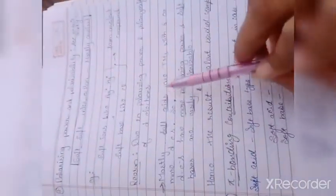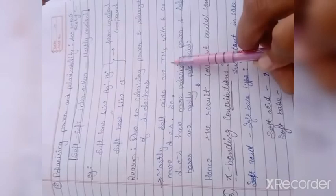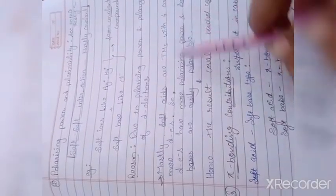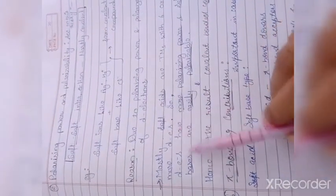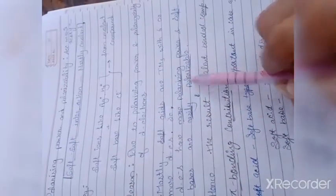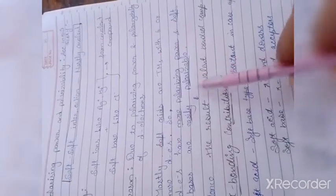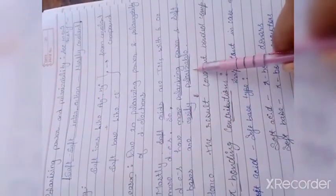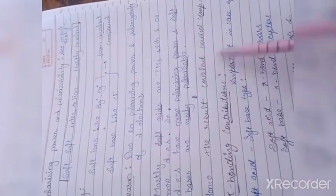Mostly, जो soft acid होते हैं, transition metals, जिनमें 6 electrons या 6 से ज़्यादा D electrons होते हैं, जो D electrons होते हैं, उनके polarizing power ज़्यादा होते हैं, और soft bases easily polarizable होते हैं. So, this will result in covalent bonded compound.